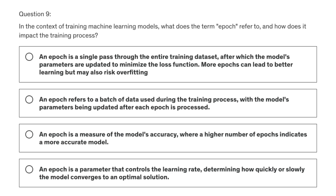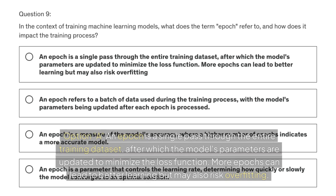Let's look at question nine. In the context of training machine learning models, what does the term epoch refer to and how does it impact the training process? Option A: an epoch is a single pass through the entire training dataset, after which the model's parameters are updated to minimize the loss function.